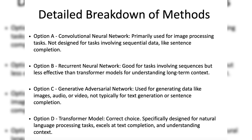Option B, recurrent neural network: RNN is good for tasks that involve sequences like generating text. However, it has trouble with understanding long-term connections in data because of problems like vanishing gradients. Although RNNs can be used for tasks like completing sentences, they are usually not as effective as transformer models, which are better at understanding context in longer sequences.